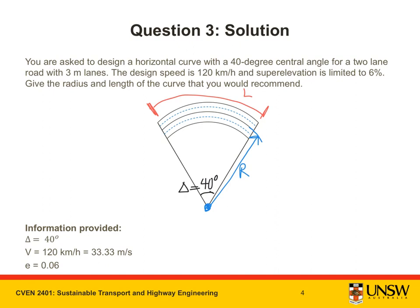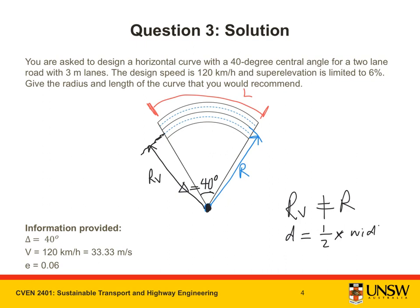Now, what is RV? RV is the radius from the center of the circle to the centerline of the innermost lane, drawn here in black. As you can see, RV is not equal to R. The distance between R and RV is half times the width of a lane.